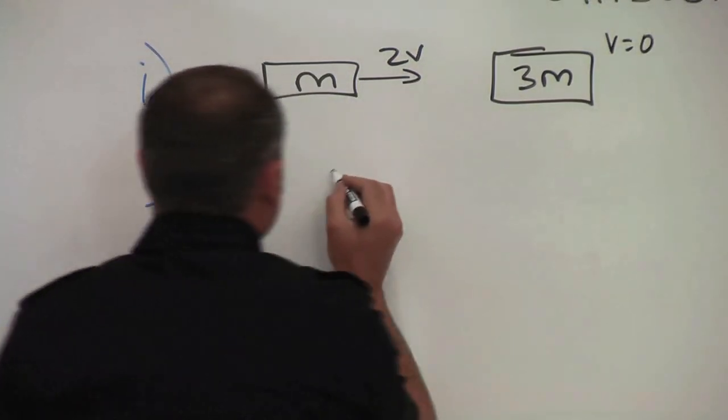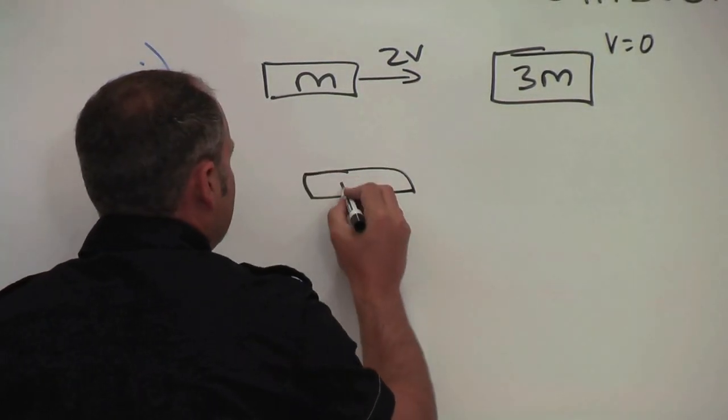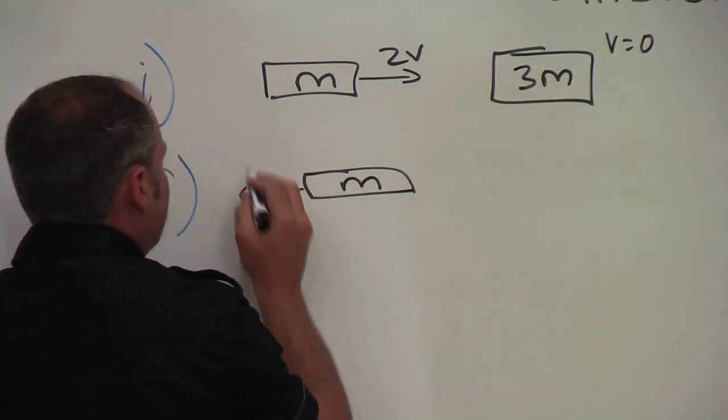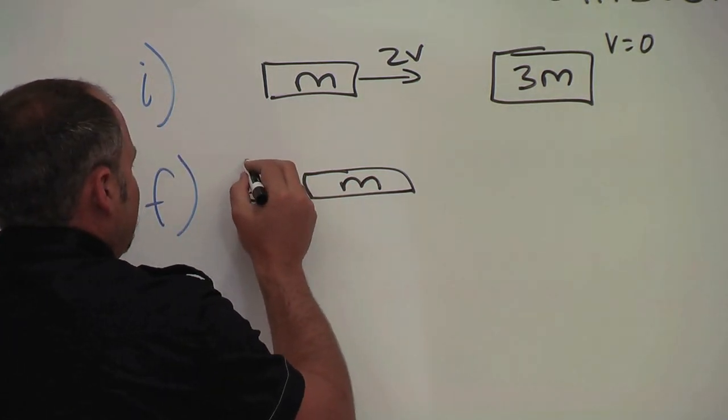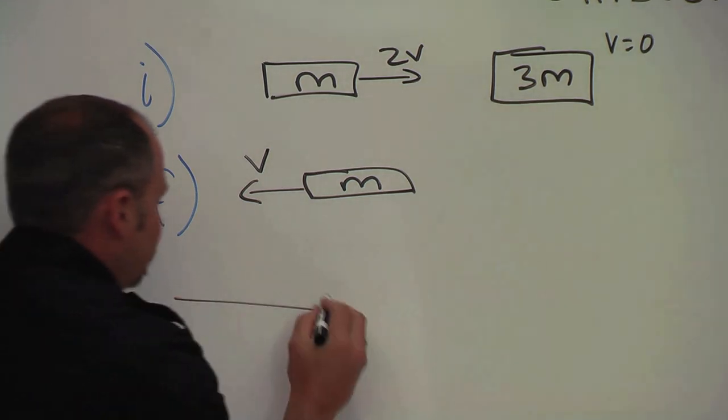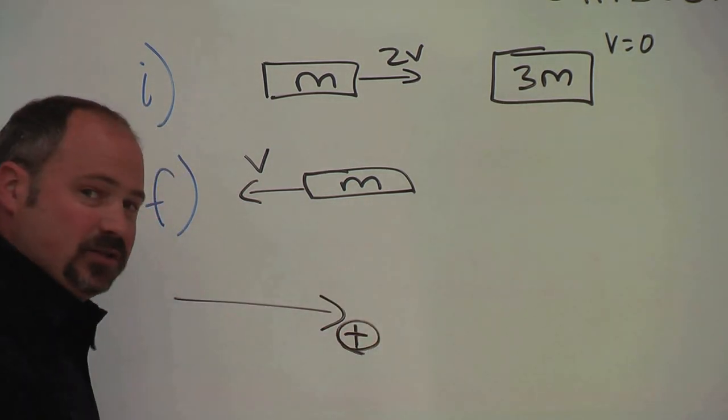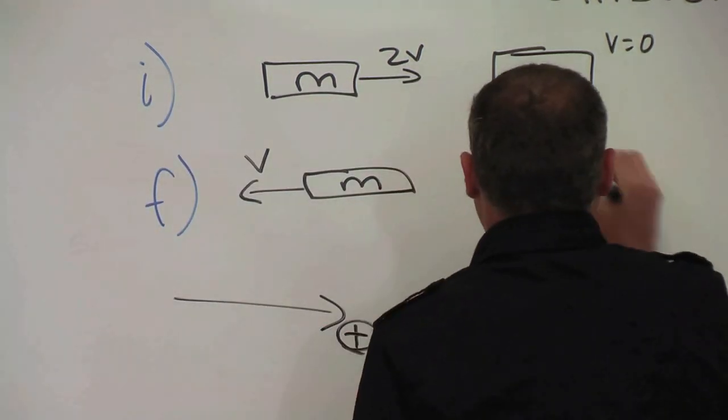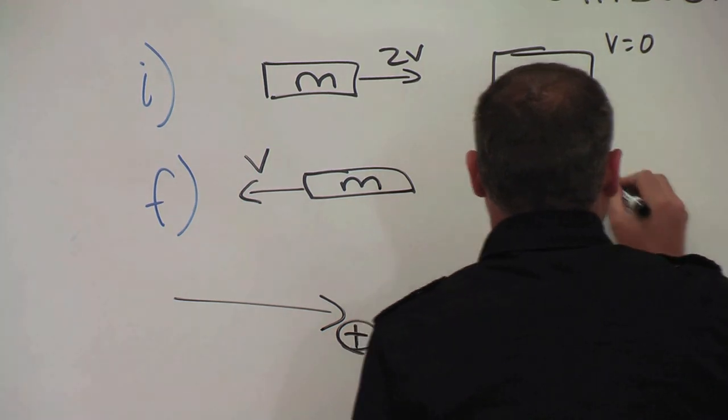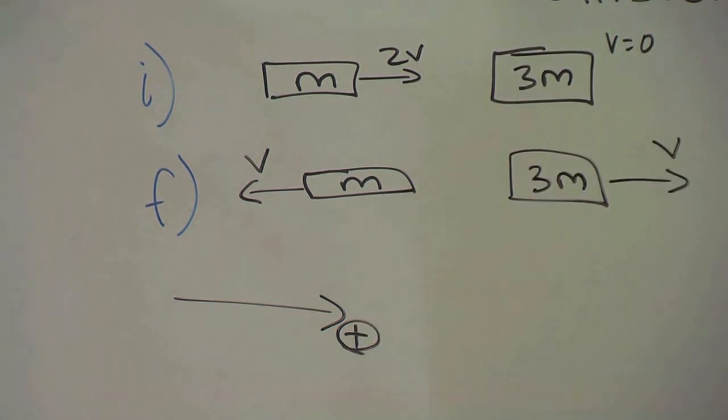And then after the collision, this guy is going here with some speed V. Note he's going in the negative direction now. That's the positive direction. This guy with three times the mass goes outwards with some speed V.